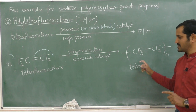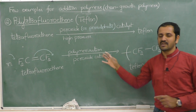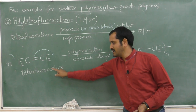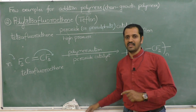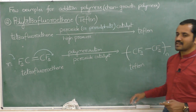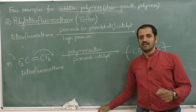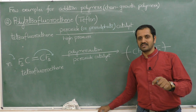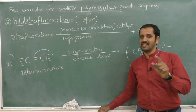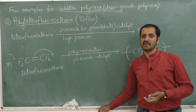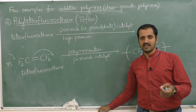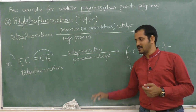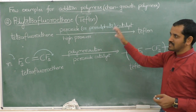When asked to write the partial structure of Teflon or name its monomeric unit, the answer is tetrafluoroethylene. Teflon is chemically inert, resistant to corrosive reagents, and can withstand higher temperatures. That is why it is used in gaskets, oil seals, and as a surface coating for utensils.